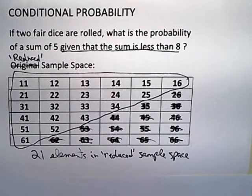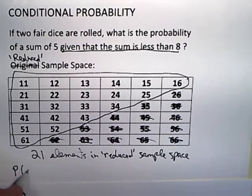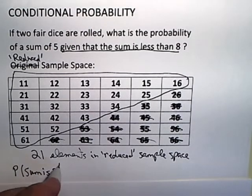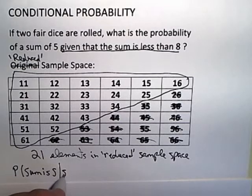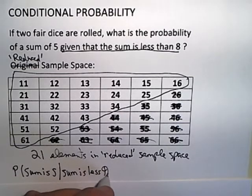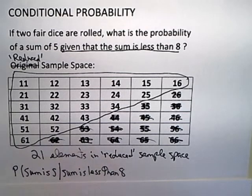The question is easy to answer now. We want to know what the probability is that the sum is 5 given that the sum is less than 8. So we've applied the condition and we've reduced our sample space.